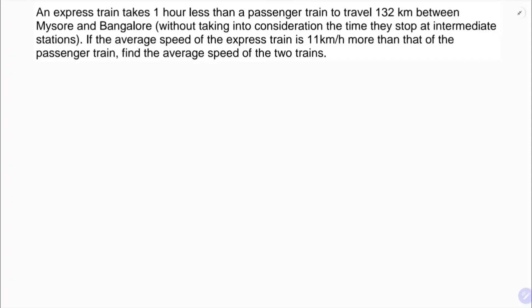An express train takes one hour less than a passenger train to travel 132 kilometers between Mysore and Bangalore. Without taking into consideration the time they stop at intermediate stations, the average speed of the express train is 11 kilometers per hour more than that of the passenger train. Find the average speed of both the trains.